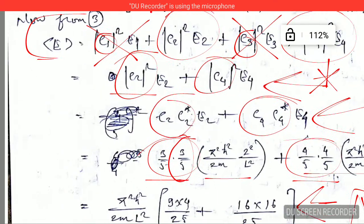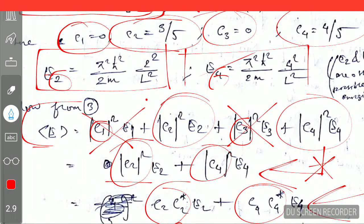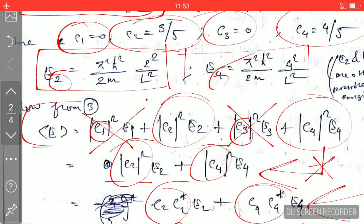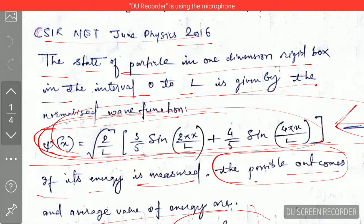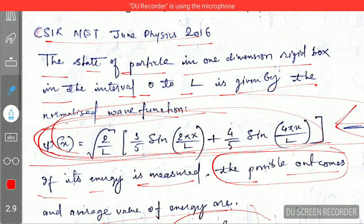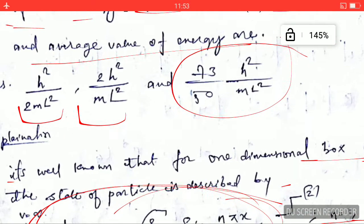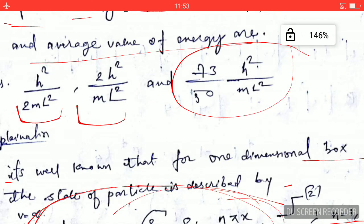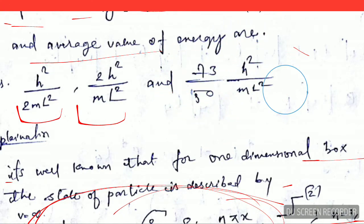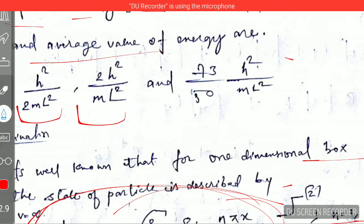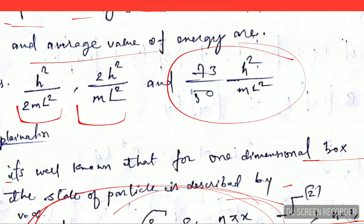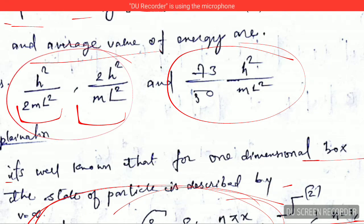Going back to the question, the average energy we just calculated matches the expected answer. Now let's also calculate the two possible energy outcomes explicitly.